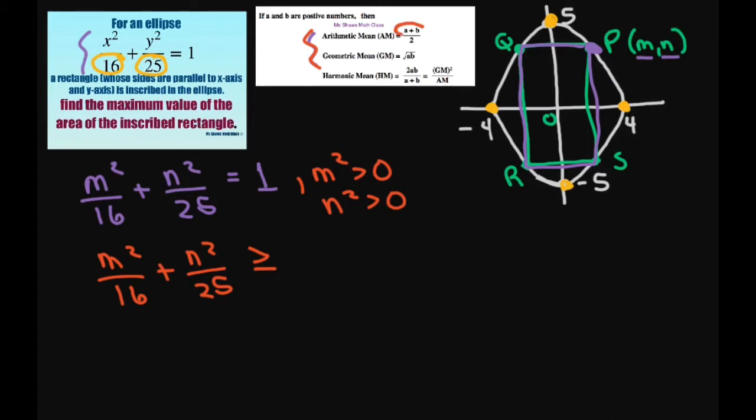I'm setting these equal. So I have my a plus b and I'm setting it equal to, I'm cross multiplying 2 times the square root of a times b. So that means it's going to be 2 times the square root of m squared divided by 16 times n squared divided by 25.